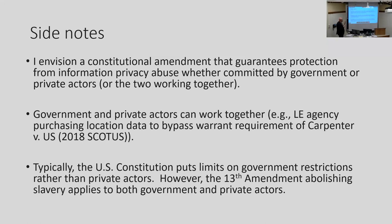Protection of information privacy abuse, whether committed by government, private actors, or the two working together. Government and private actors can work together to abuse privacy. One example: law enforcement agencies purchasing location data, which bypasses the warrant requirement of Carpenter v. U.S., a 2018 SCOTUS decision. So the Fourth Amendment's not implicated — you have a subscription from a private party that tells you where people are, where they've been, where they're going to be. You don't have to worry about a warrant.